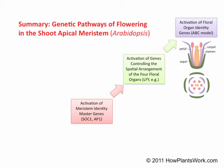Once the meristem has made this floral transition, the second genetic stage is the activation of genes involved in the spatial arrangement of the four floral organs. As shown in the diagram on the right, most flowers consist of sepals, petals, stamens, and carpels, typically arranged in four concentric whorls. Simply put, the second stage is involved in the arrangement of the four floral organs, sort of like arranging the chairs in a room.